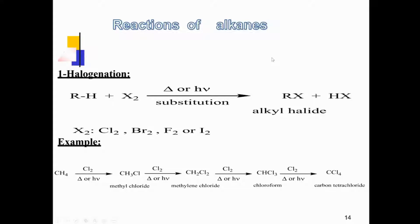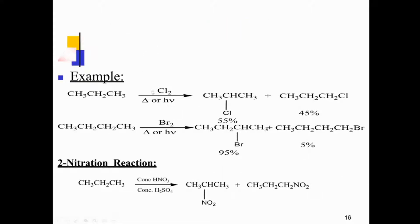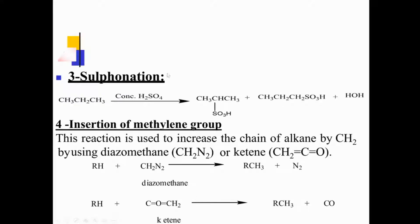Halogenation of alkanes is a free radical reaction, and you can add different halogens to alkanes as desired. The second reaction type is nitration: alkanes reacted with concentrated nitric acid and concentrated sulfuric acid give nitroalkanes. Third is sulfonation by reaction with sulfuric acid. Fourth is insertion of a methylene group: if you react alkanes with diazomethane, you get alkanes by this type of reaction. These are the four common types of reactions that alkanes undergo.